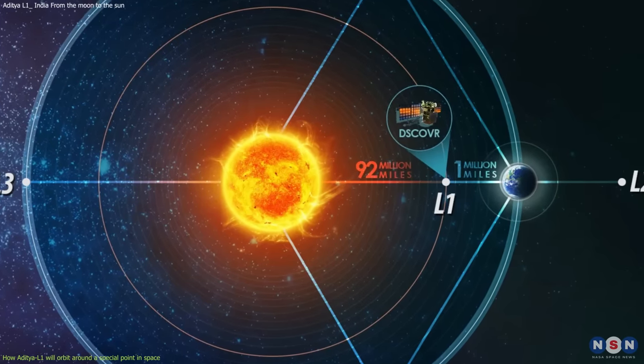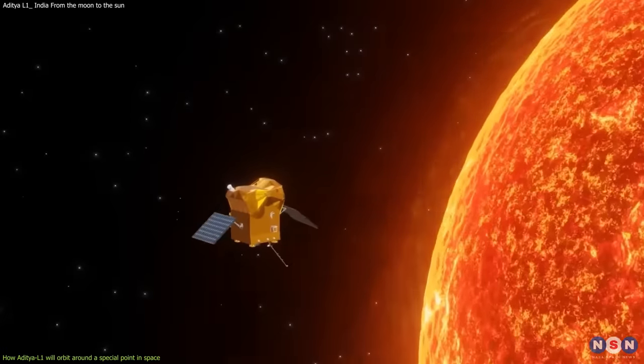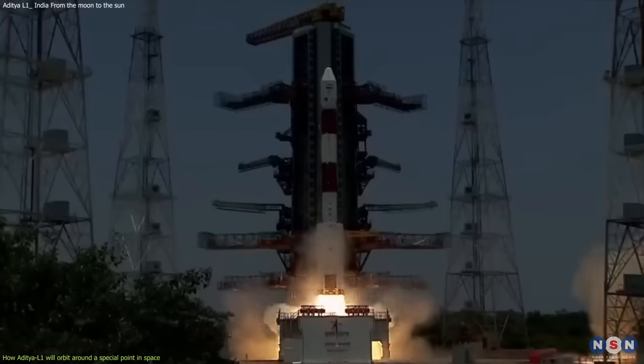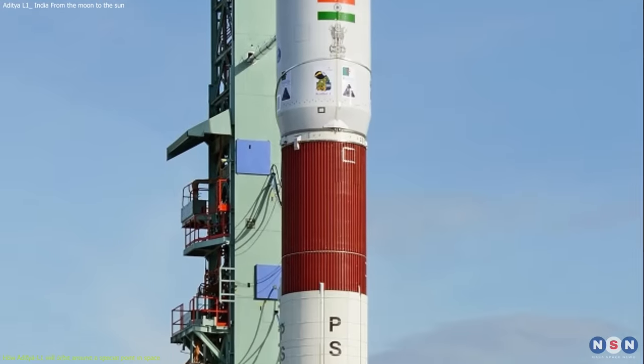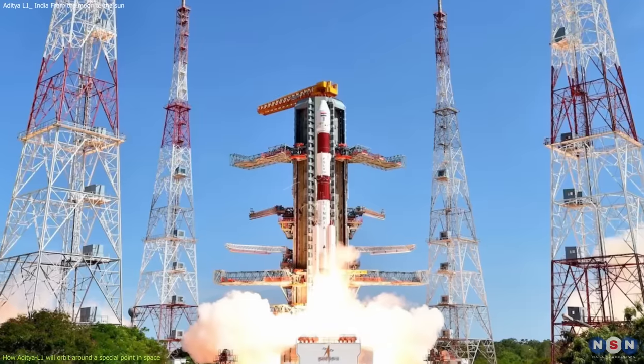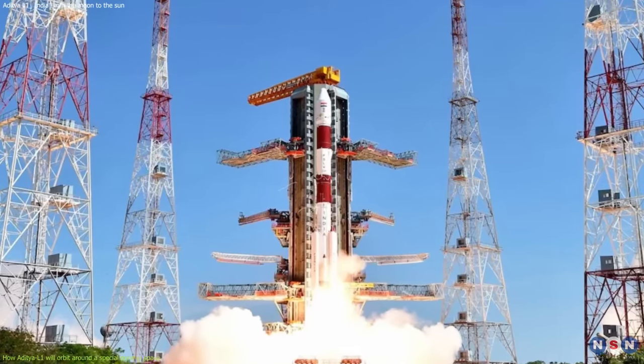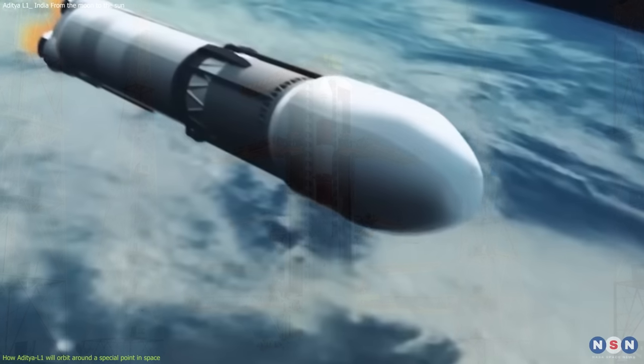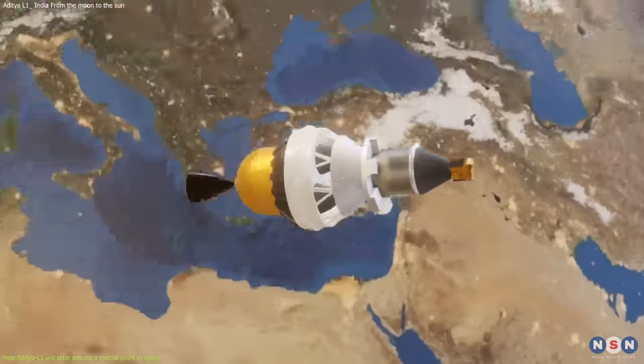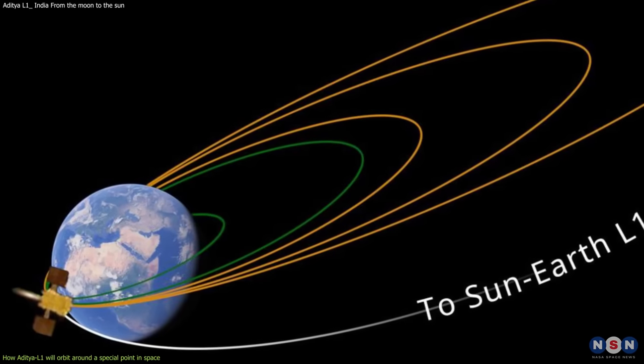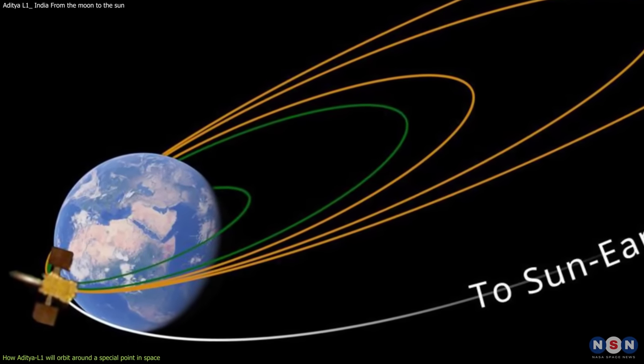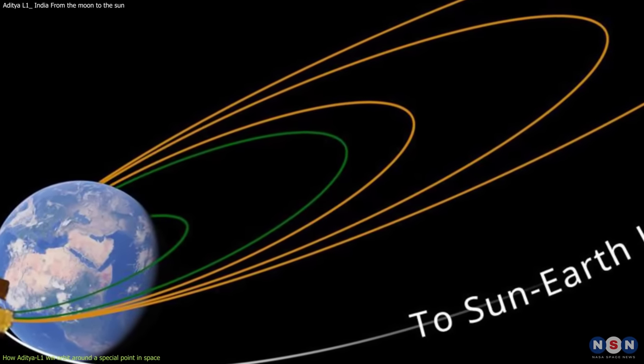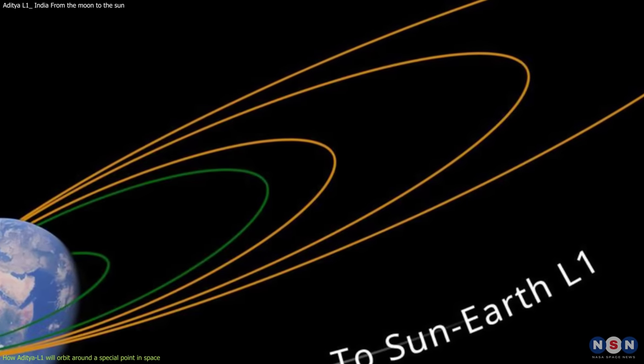Aditya L1 was launched by India's Polar Satellite Launch Vehicle, which is one of India's most reliable rockets. This vehicle has launched many satellites and missions for India and other countries, including Chandrayaan-3. It placed Aditya L1 into an elliptical orbit around Earth, with a perigee, which is the closest point, of about 250 kilometers, and an apogee, which is the farthest point, of about 18,000 kilometers.